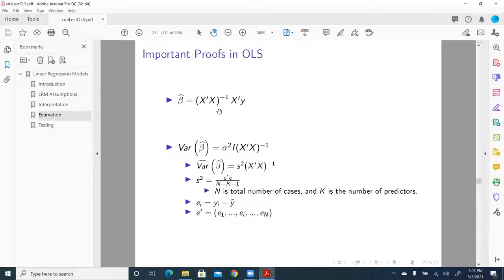Then take an inverse of that, multiplied by X prime again—the transpose matrix of X—multiplied by the column vector of the response variable. So that is the parameter estimates vector from OLS regression, and that column vector usually includes the intercept and slopes.